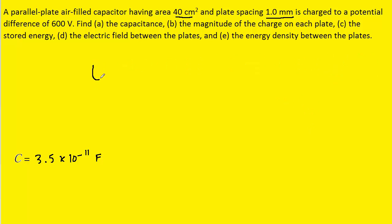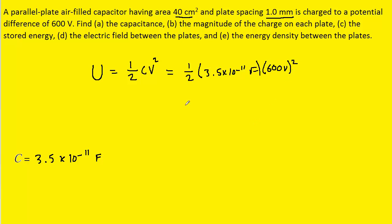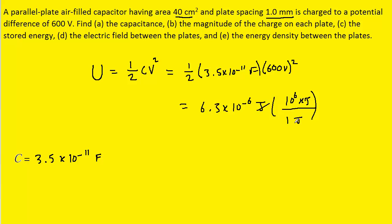For part C, we can calculate the stored energy by using the following equation that applies to capacitors. Sort of reminiscent of kinetic energy, but this is the electrical energy stored on the plates of the capacitor. All we have to do is multiply one-half by the capacitance and then by the potential difference squared. When we do that, we get 6.3 times 10 to the minus sixth joules. We could also convert that into microjoules by noting that one joule is equivalent to 10 to the positive 6 microjoules, giving us 6.3 microjoules.